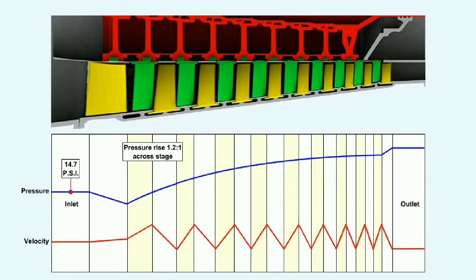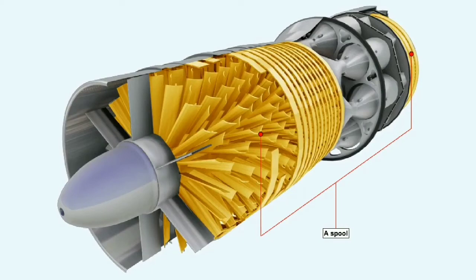The pressure rise across each stage is only quite small — the ratio being about 1.1 or 1.2 to 1 — meaning the pressure might only increase by about 3 pounds per square inch in the first stage. To achieve the compression ratios demanded by more powerful engines, many rotor stages may be fitted on one shaft driven by its own turbine. Assuming a pressure ratio of 1.2 to 1 for each of 10 stages, the output pressure would be in the region of 91 pounds per square inch. This arrangement of compressor rotor stages on a single shaft driven by a turbine is termed a spool.